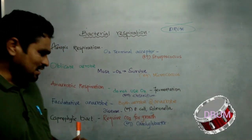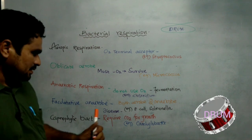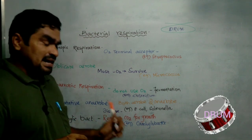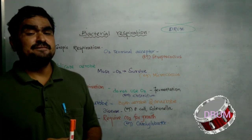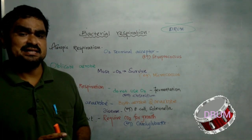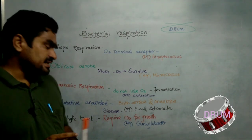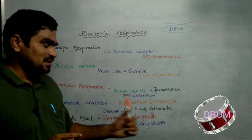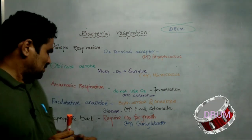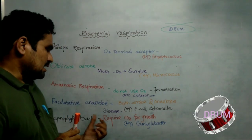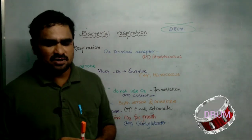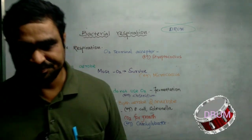The final one is capnophilic bacteria. These bacteria require a particular gas — carbon dioxide — for their growth. An example of capnophilic bacteria is Campylobacter.